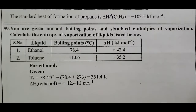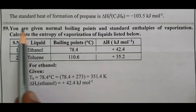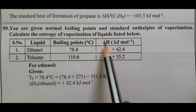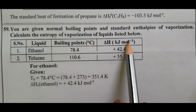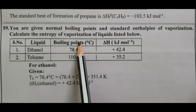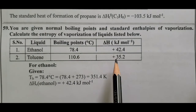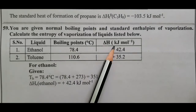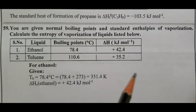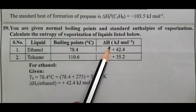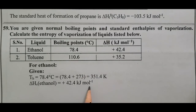Question number 59: Given the normal boiling points and standard enthalpy of vaporization, calculate the entropy of vaporization of liquids listed below — ethanol and toluene. The formula is delta S vaporization equals delta H divided by T, which is Q by T. For ethanol, boiling point is 78.4 degrees Celsius, converted to Kelvin. Delta H vaporization equals 42.4 kilojoule mole power minus 1.